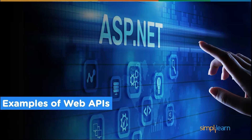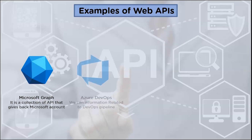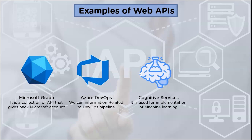Some examples of web APIs are: Microsoft Graph, which is a collection of APIs that gives us information from our Microsoft account; Azure DevOps, which lets us get information about DevOps pipelines; Cognitive Services, which can be used for adding machine learning capabilities; and PlayFab, which is a set of APIs for games.